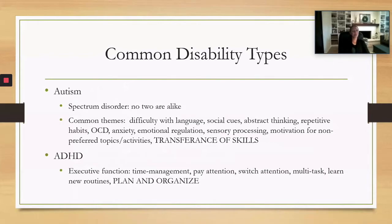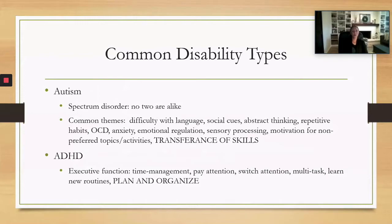Let's talk about some of the more common disability types you'll probably see at your schools. Autism spectrum disorders have become really increasingly prevalent, and it's called a spectrum disorder because it can vary so widely. One of the big things is the transference of skills — for example, if a student learns graphing in math and then you ask them to graph in science, we sometimes assume they should be able to do that, but the context is different.